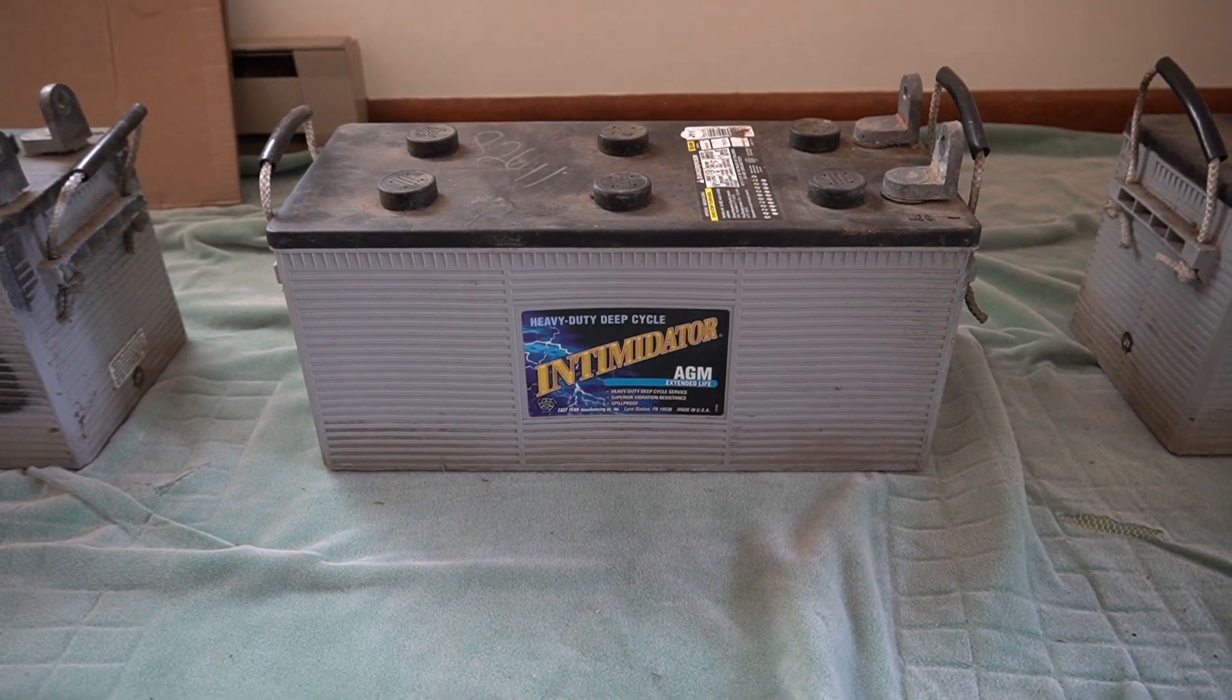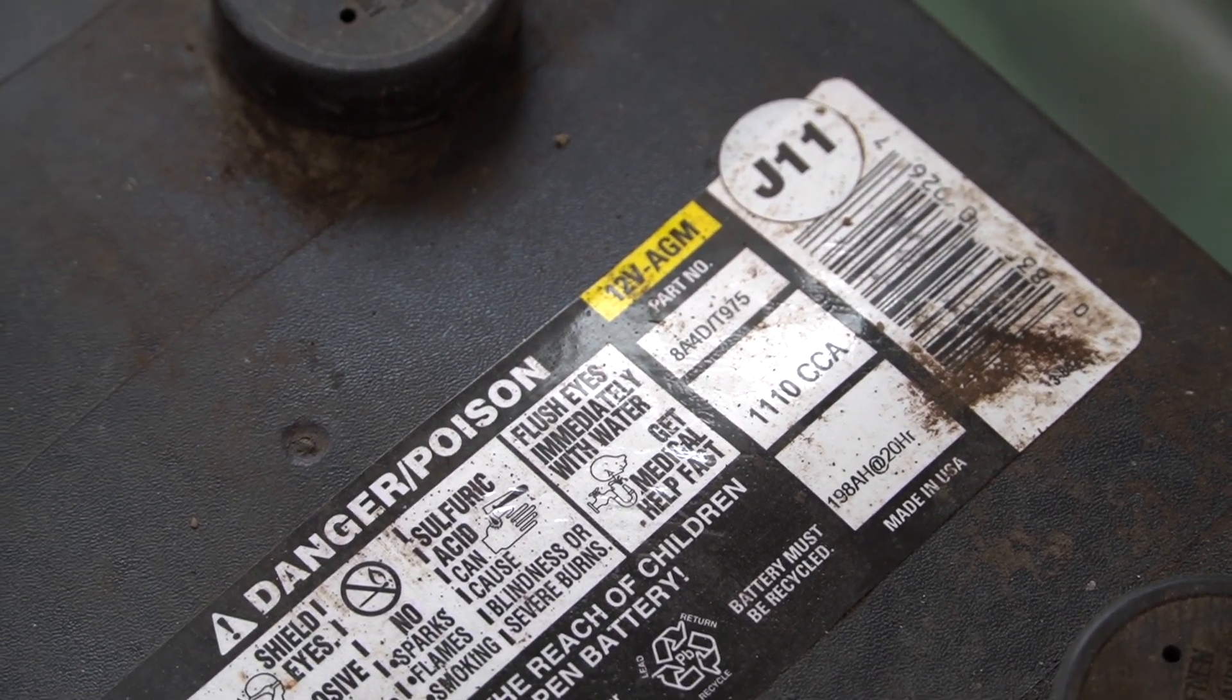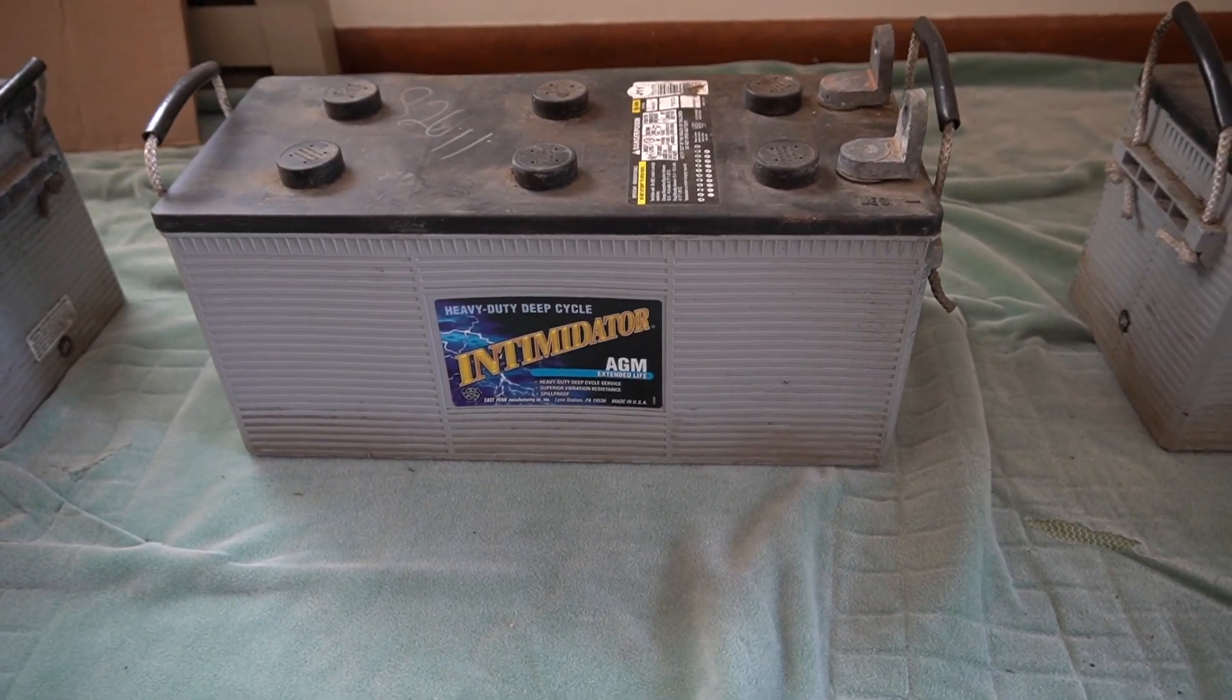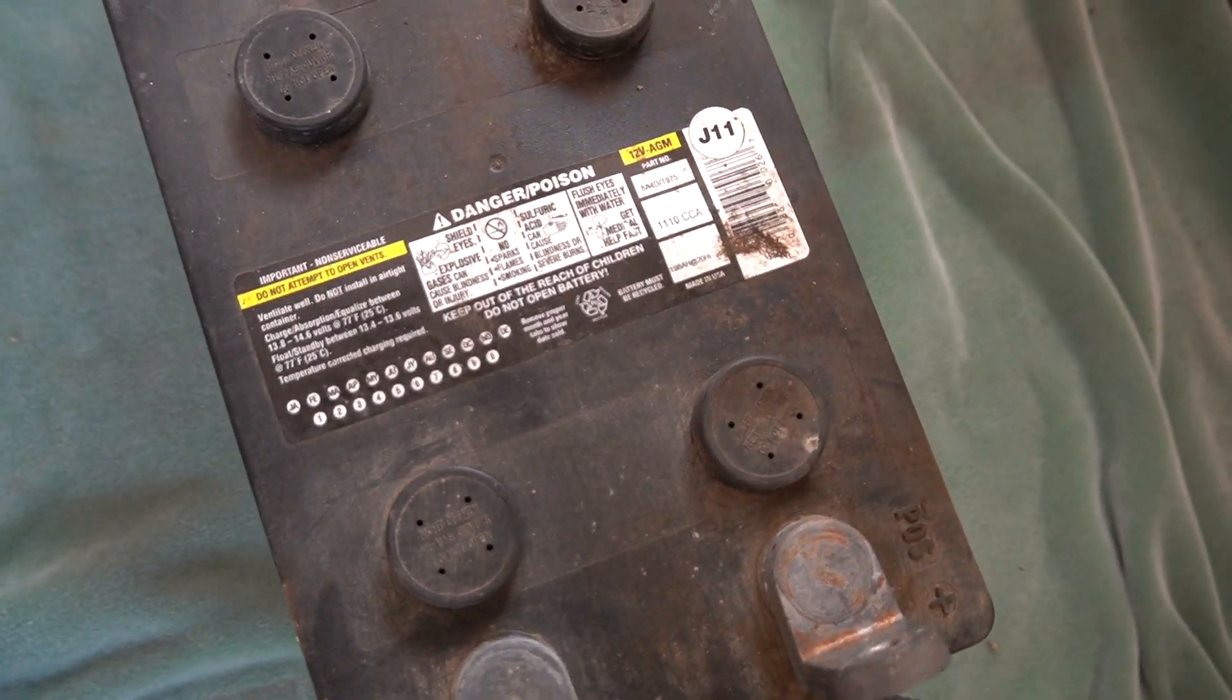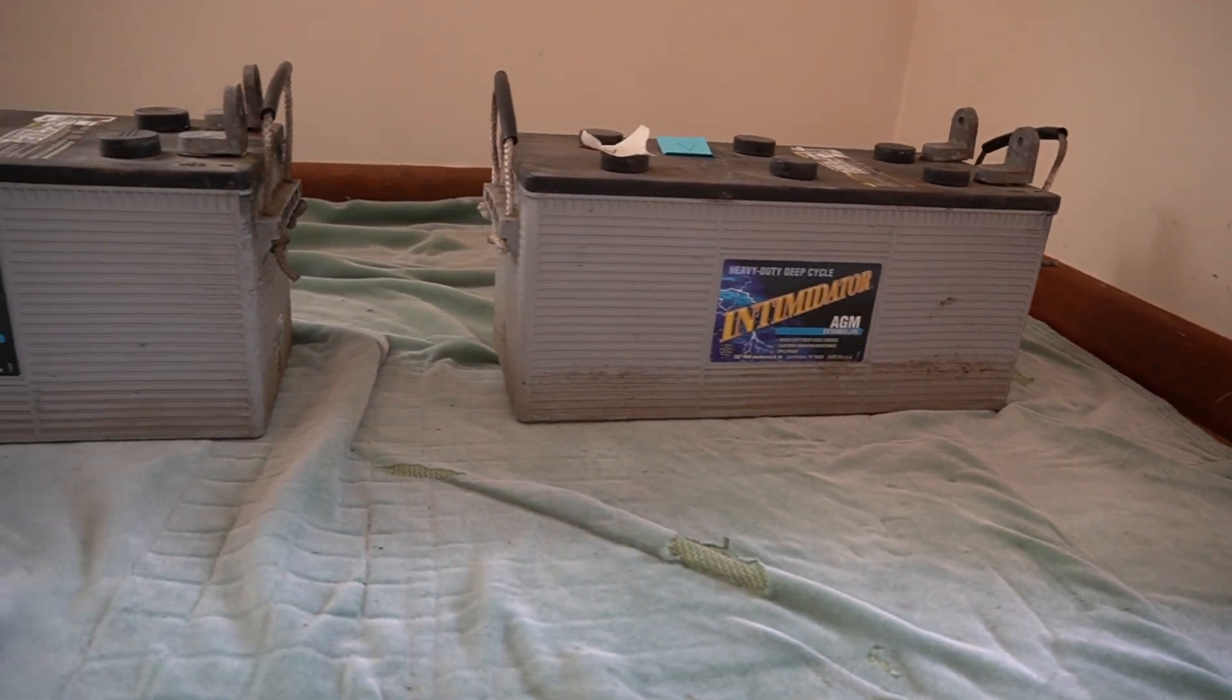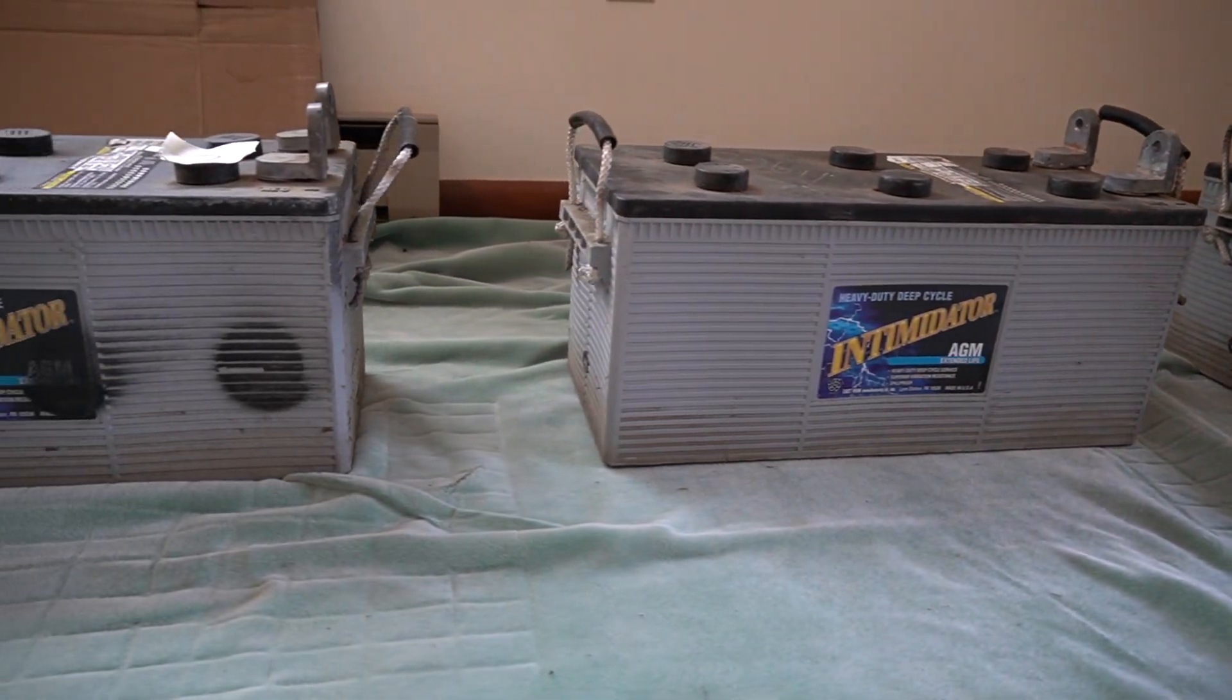Each of these batteries, when new, had a rated capacity of 198 amp hours, which gives the entire pack a rating of about 14.25 kilowatt hours. From the factory, Vantage rated this pack size to deliver about 60 miles of range at the truck's limited top speed of 25 miles an hour. Now I have bigger and better plans for this little truck, however I wanted to see if I could make it move under its own power first with this original pack.